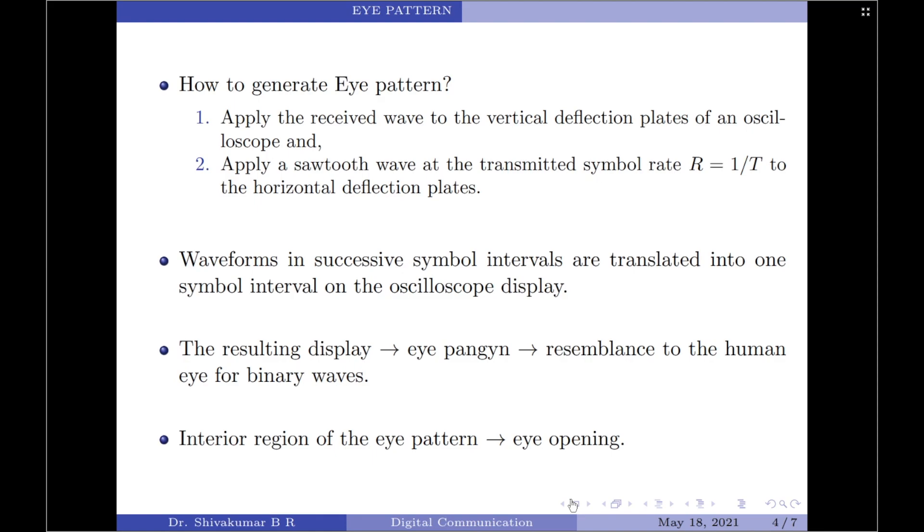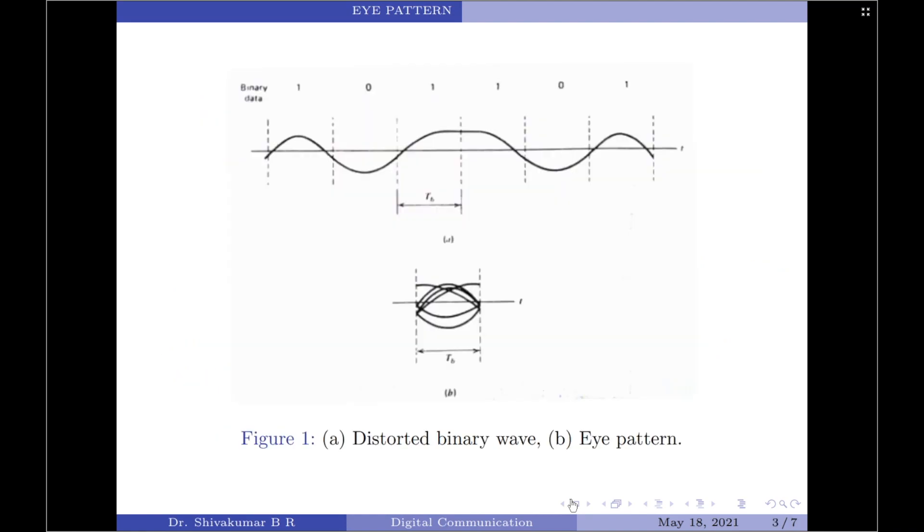When we do so, the waveforms in successive symbol intervals are translated into one symbol interval on the oscilloscope display. In this diagram, we provide an example illustration for the case of a binary wave for which T is equal to Tb.